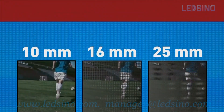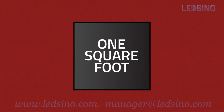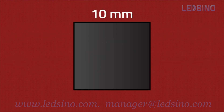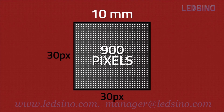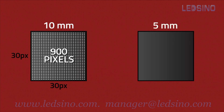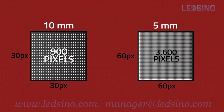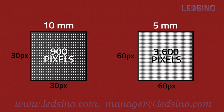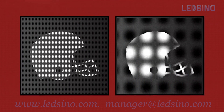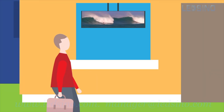Here's an example: an LED panel measuring 12 inches high by 12 inches wide — one square foot. With a 10 millimeter pixel pitch, we have 30 pixels high and 30 pixels wide, or 900 pixels. Using the same size panel, if we reduce the pixel pitch to 5 millimeters, we now have 60 pixels high and 60 pixels wide, quadrupling our pixel density to 3,600 pixels per square foot, with considerably better image quality.